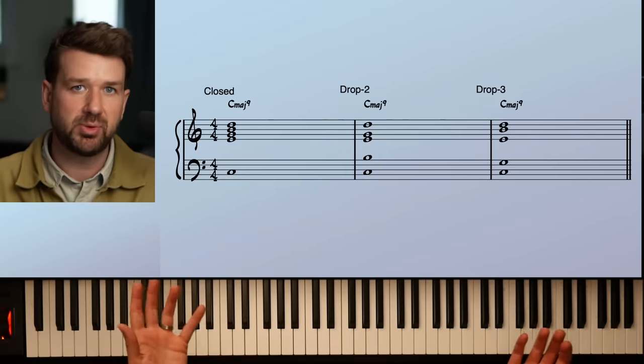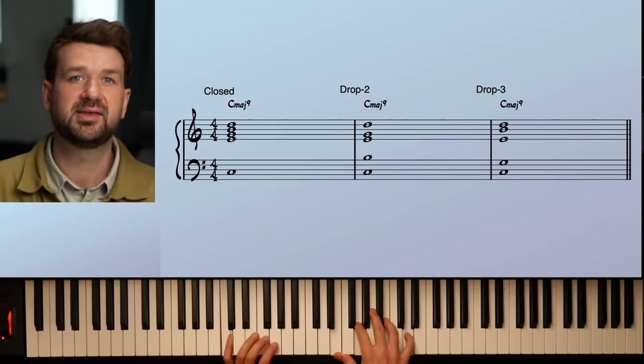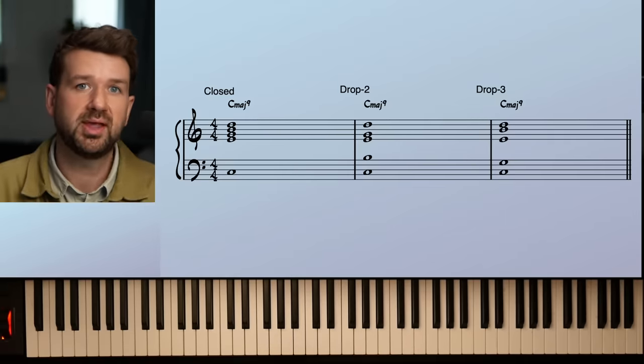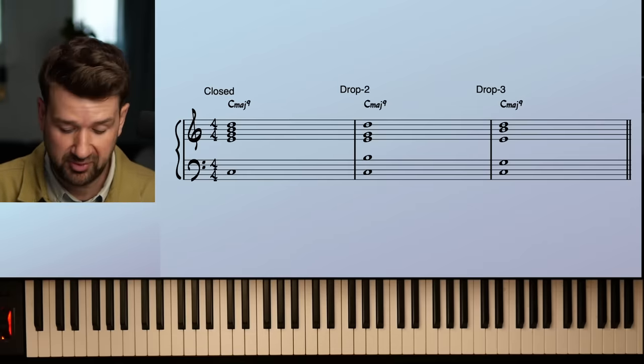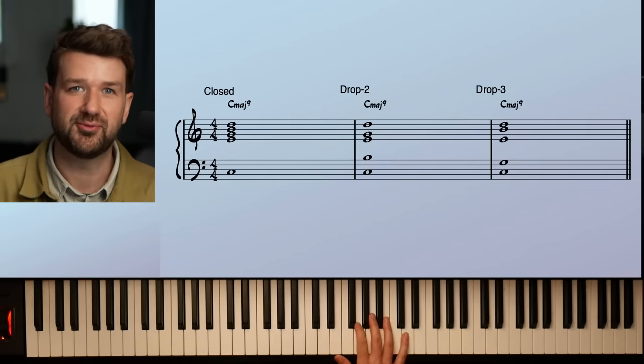we have our C major nine. I've got my closed voicing on top. Everything is as close as it can be, except for the root, which will give license to be in whatever octave we need it in. As we're kind of, when we're playing solo piano, we're providing the bass to the situation. So we have to have some freedom there. Now, if you are rootless, if you're playing with a bass player and you don't want to throw in a root, which by the way, you can use a root when you're playing with a bass player. But if you don't want to,